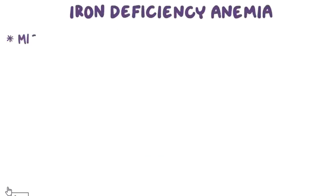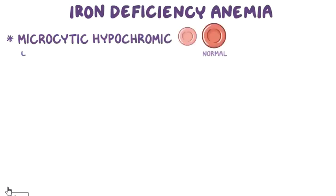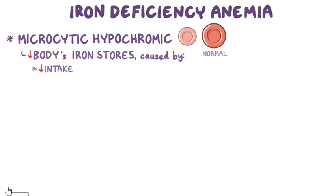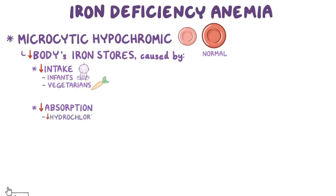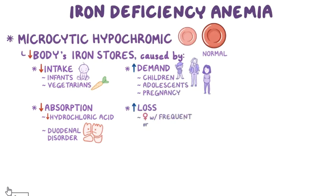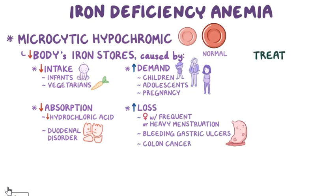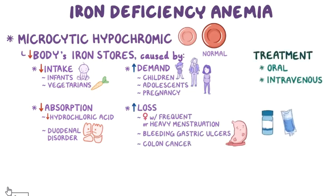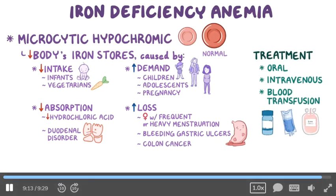As a quick recap: iron deficiency anemia is a type of microcytic hypochromic anemia caused by a decrease in the body's iron stores. It can be caused by decreased intake, seen in infants and vegetarians; decreased absorption due to decreased hydrochloric acid production or duodenal disorder; increased demand, seen in children, adolescents, and pregnant females; and increased loss in the case of females with frequent or heavy menstruation, bleeding gastric ulcers, and colon cancer. Treatment involves oral or intravenous iron supplements, or blood transfusion in severe cases.